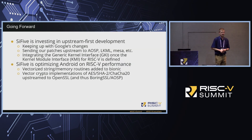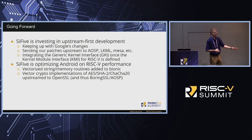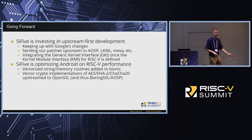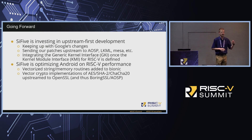Going forward, HiFive is investing in upstream-first development — we don't want to maintain a downstream AOSP distribution, so we're minimizing patches by upstreaming to AOSP, the kernel mailing list, Mesa, and wherever appropriate. We also want to support Google's kernel interface for RISC-V once it's defined, as that hasn't been released yet. On performance, we've already upstreamed vectorized string and memory copy routines to Bionic (Android's libc) and vector crypto implementations to OpenSSL, which will eventually filter back into Android. With Android running on our latest performance series CPUs in an FPGA environment, we have a great PMU to measure performance and profile library optimizations used within Android.